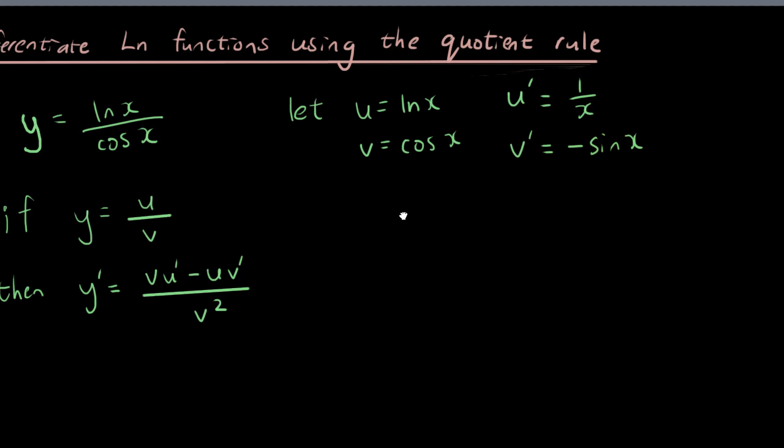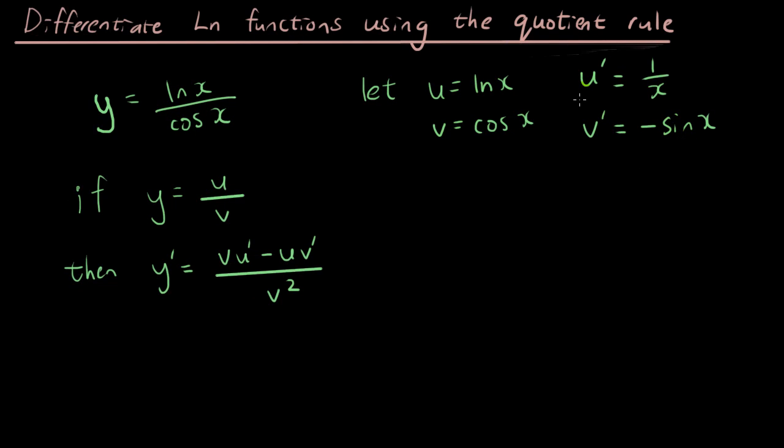So now that we have each of the terms, let's substitute this into the formula. I have y prime equals cosine x times 1 over x minus ln x times negative sine x, divided by v squared, which is cosine x squared.